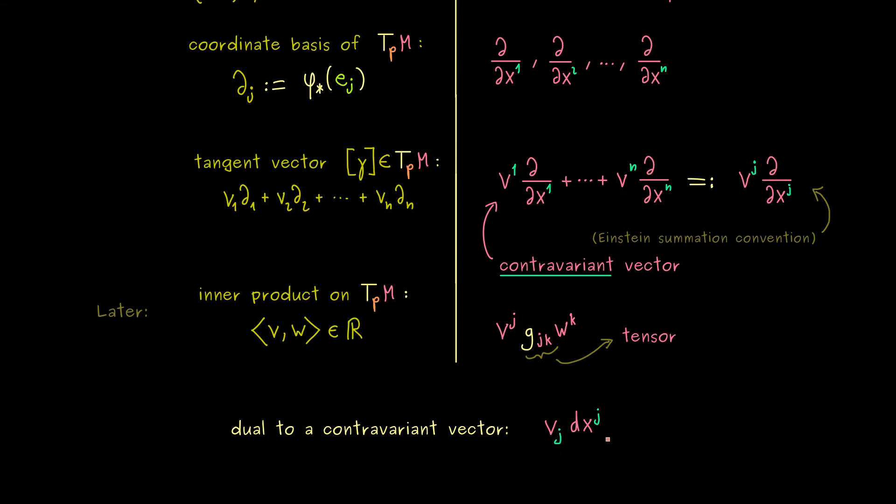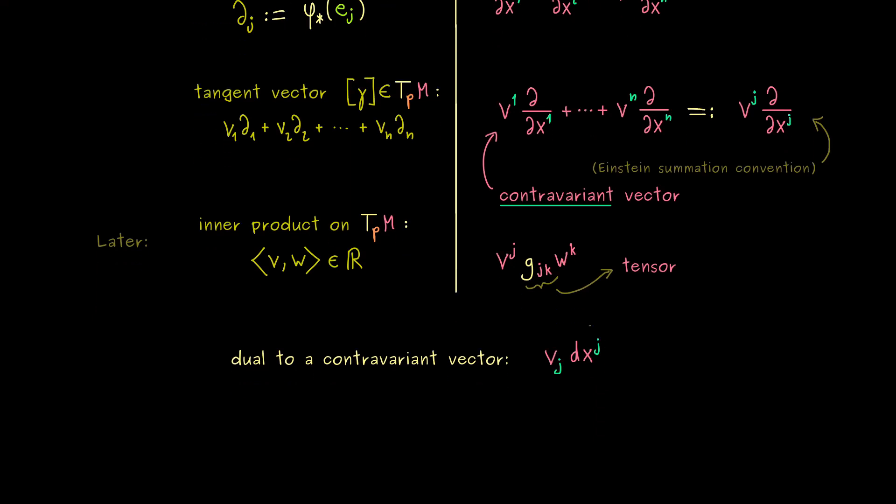Indeed, this object dx^j is what we will need for integrations later. In fact, the name of this object is not so complicated. It is simply called a one-form. And seeing the d in the notation here, you might already expect that this thing is related to the differential of a smooth map. Therefore, you can already remember a one-form has to do something with linear maps.